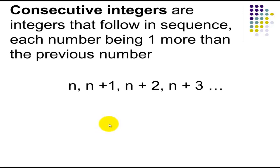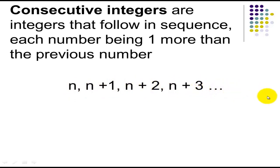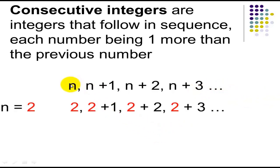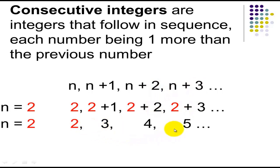This will be the expression we use to represent consecutive integers. If n is our first integer, the next integer will be n plus 1, followed by n plus 2, n plus 3, n plus 4, and so on. For example, if n equals 2, replacing all n's by 2: you will have 2, 2 plus 1 is 3, 2 plus 2 is 4, 2 plus 3 is 5 — so your consecutive integers are 2, 3, 4, and 5.